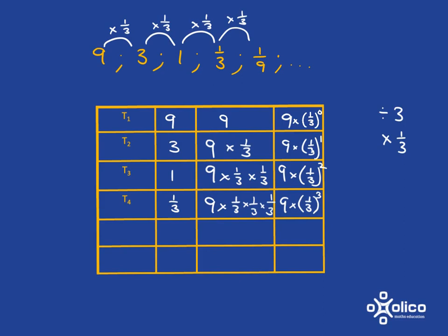Now again, just as we did last time, we notice the pattern. When we've got term one, we've got a power of zero. Term two, we've got a power of one. Term three, we've got a power of two. Term four, we've got a power of three.